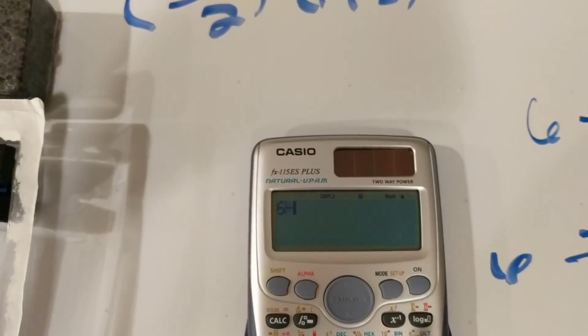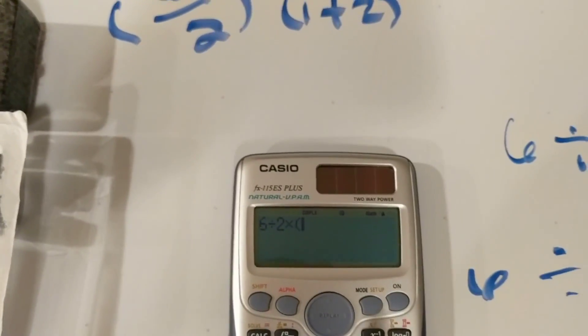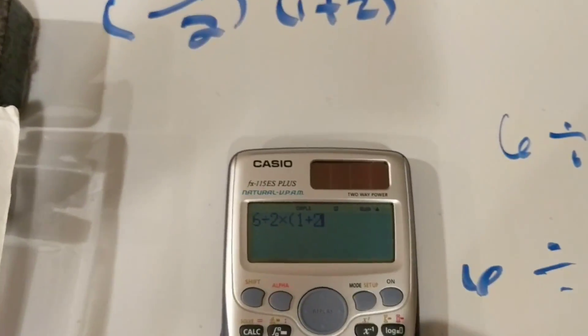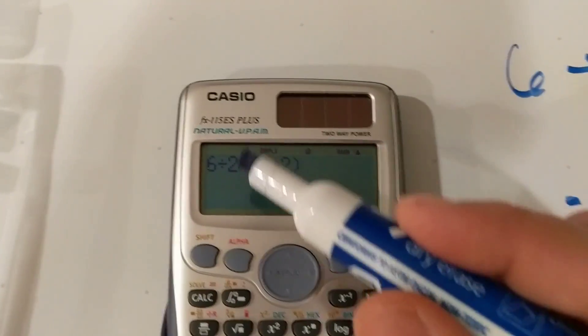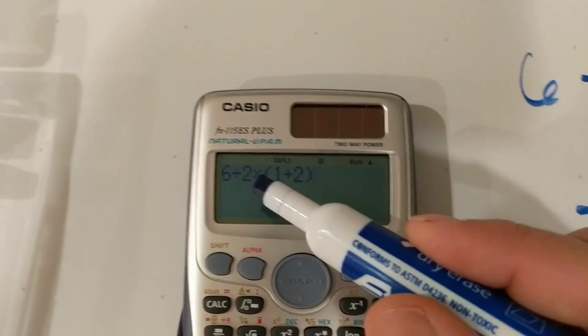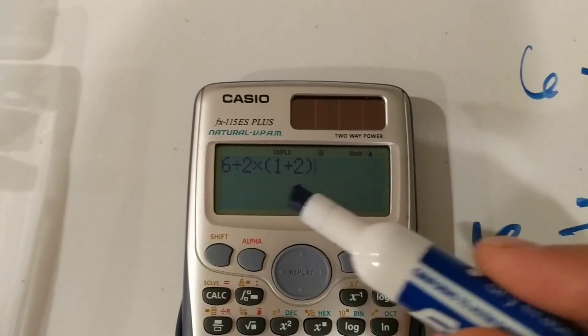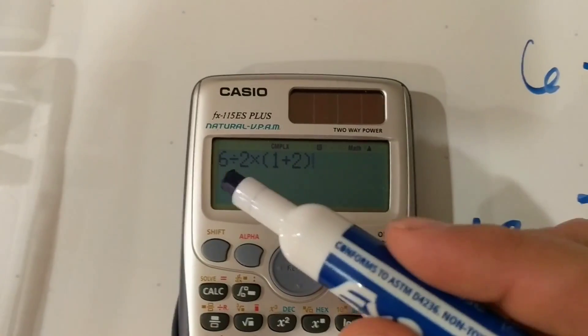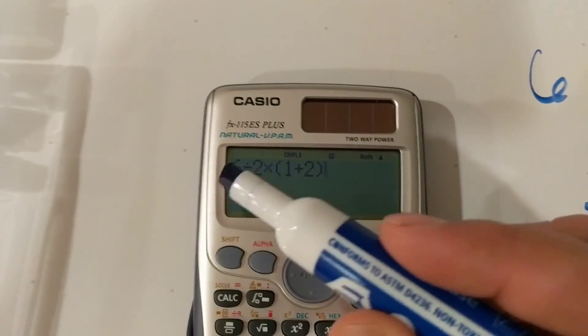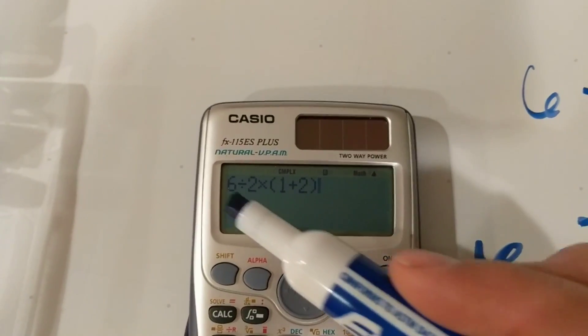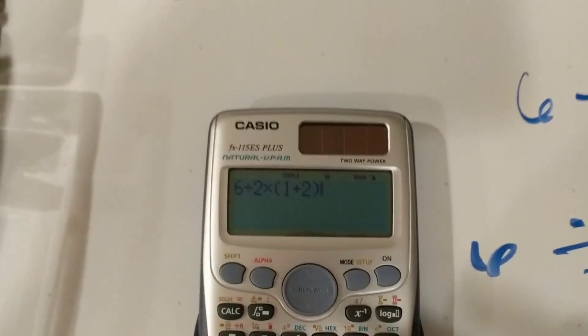But if you were to say 6 divided by 2 times the quantity 1 plus 2, well, now you're adding a function in here. You're saying this function has to happen. And you're removing the association. And therefore your PEMDAS applies. And you go from left to right. It doesn't matter which way you go in this one because you've now added this other function. 6 divided by 2 times 1 plus 2 equals 9.